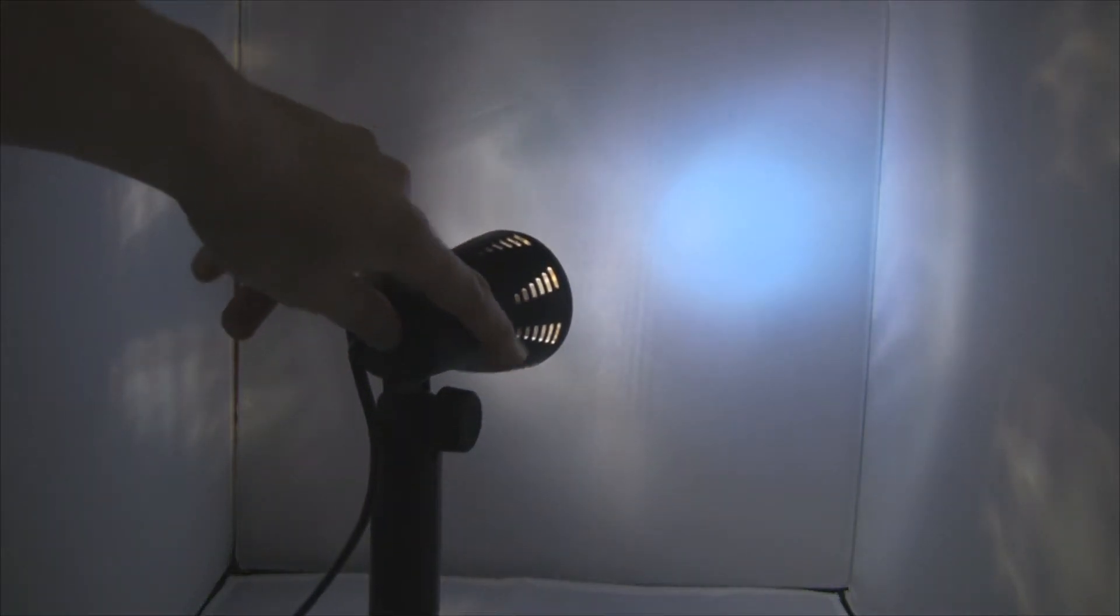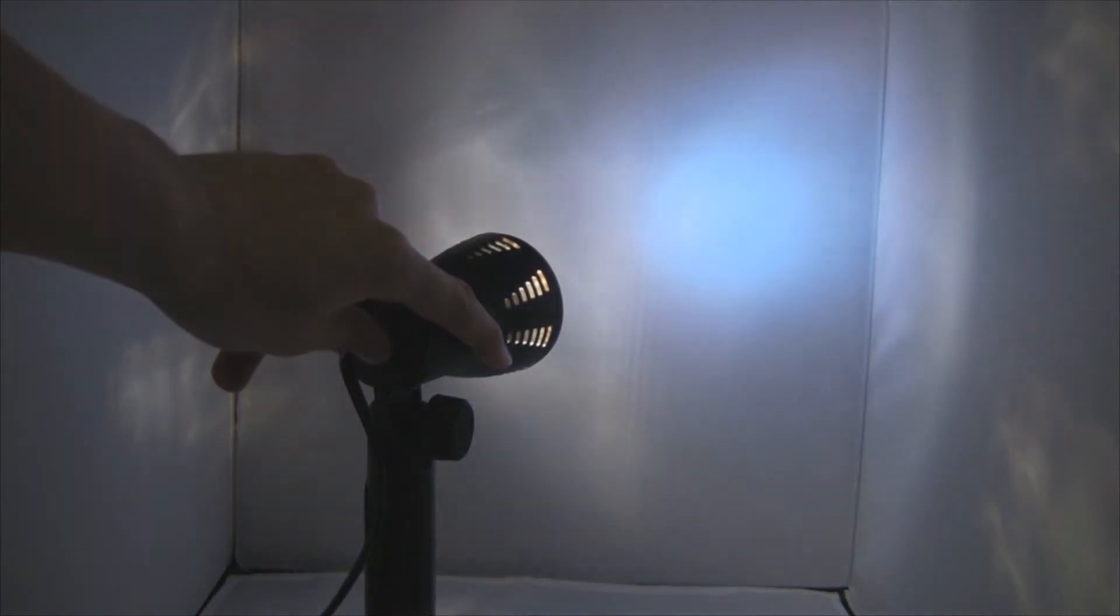So here's the filament bulb, the halogen light. Turn it on and we get a nice, quite centered light. It's not very spread out but it's still a very nice white light.